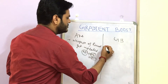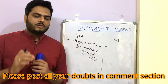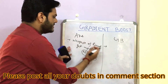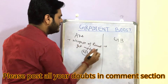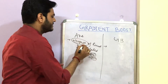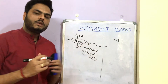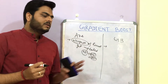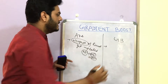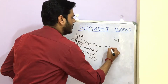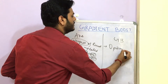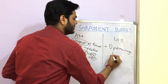In gradient boost, multiple models will also be combined. The difference is that in AdaBoost, learning happens by adjusting the weights, but in gradient boost, learning happens by optimizing the loss function.